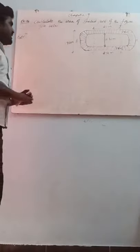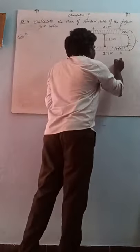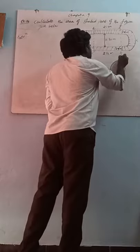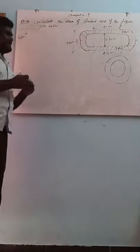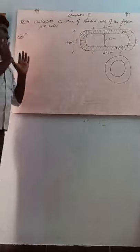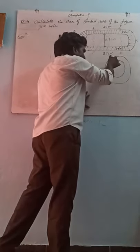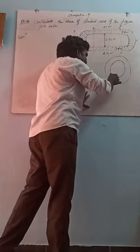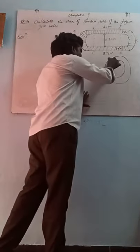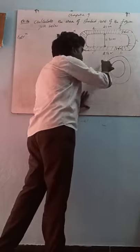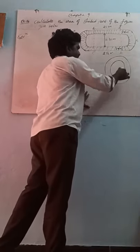Circular part means: any two circles having a common center are called concentric circles. The two concentric circles — this gap between them is called the circular path. The area of this circular part is equal to the area of the outer circle minus the area of the inner circle.